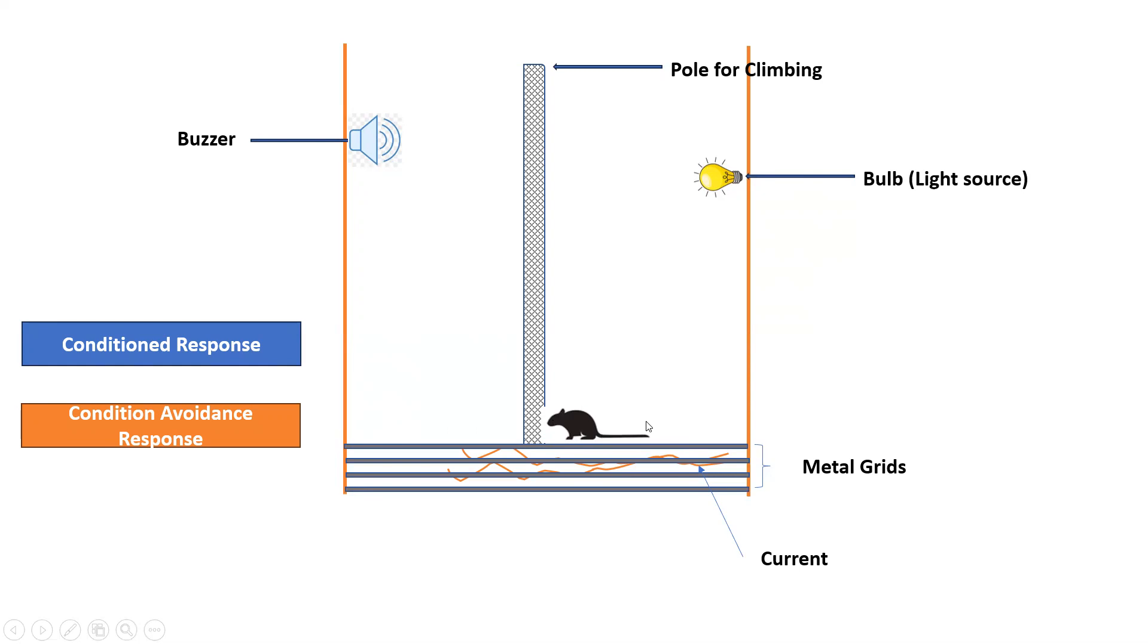So all animals will train and they will recognize that yes, this is the buzzer and this is the current, and to avoid this they will climb over the pole. And this is what the responses you can observe, whether the animal shows response or not.